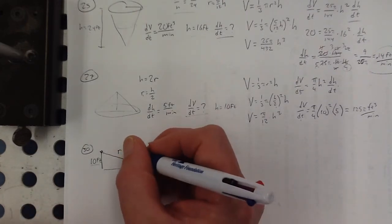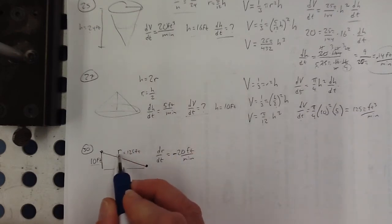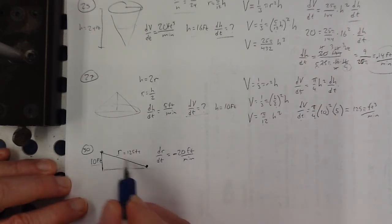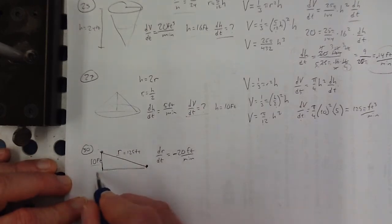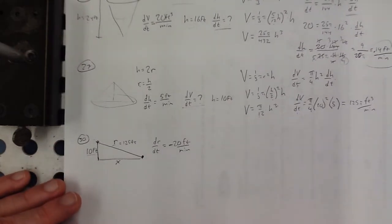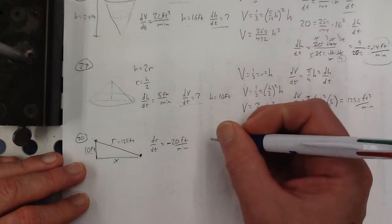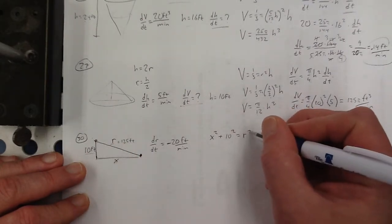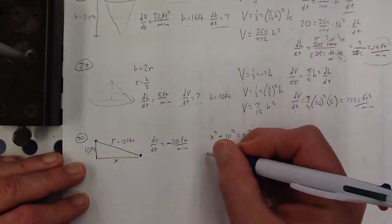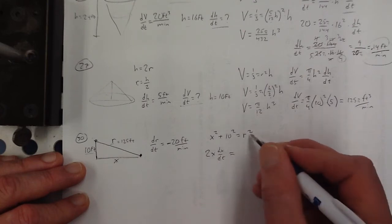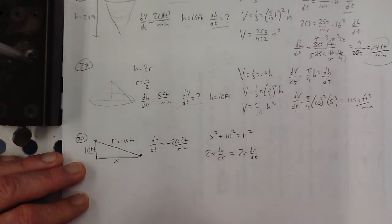We want to know at what rate the boat is approaching the dock — that horizontal distance I'll call x, so dx/dt is what we want. The equation from geometry relating these is the Pythagorean theorem: x² + 10² = R². Taking the derivative gives 2x(dx/dt) = 2R(dR/dt). The 2s cancel. I don't know x yet, but from the Pythagorean theorem: x = √(125² − 10²) = 124.6 feet.